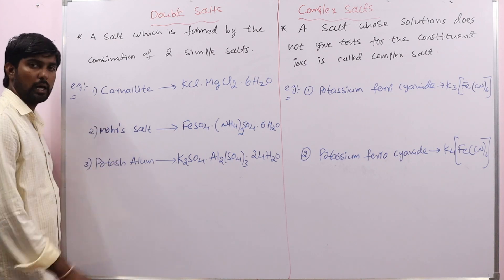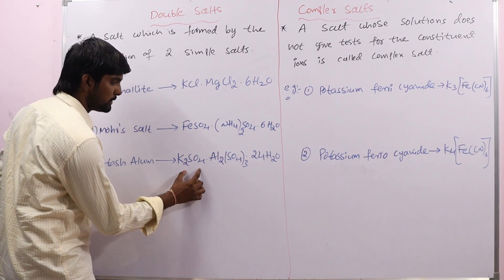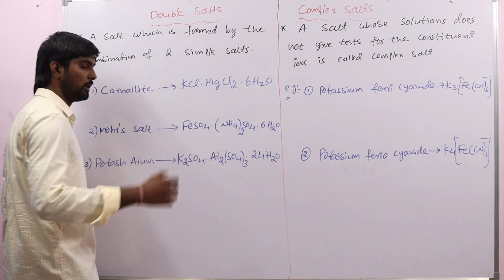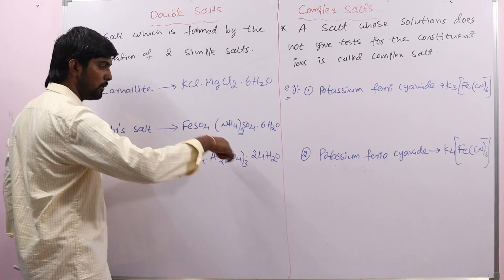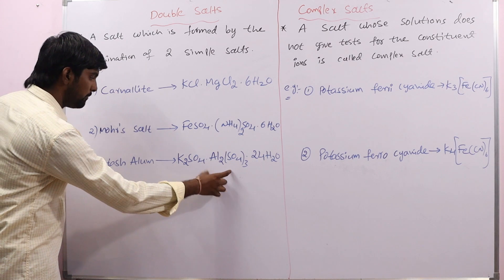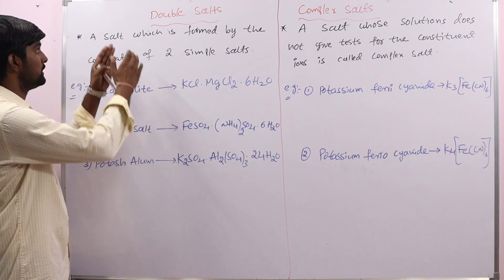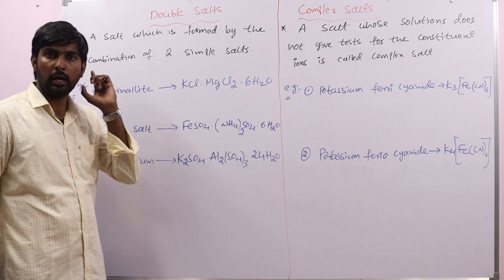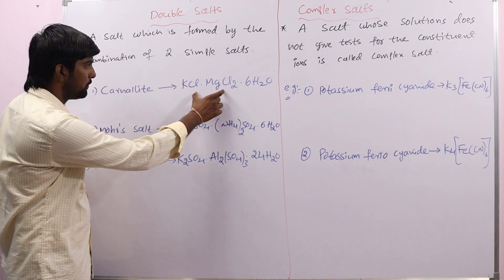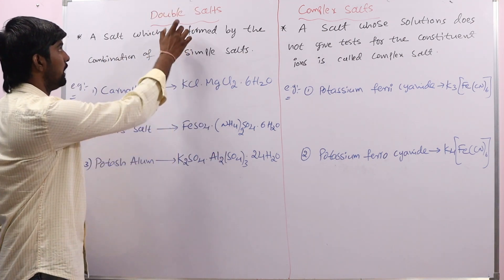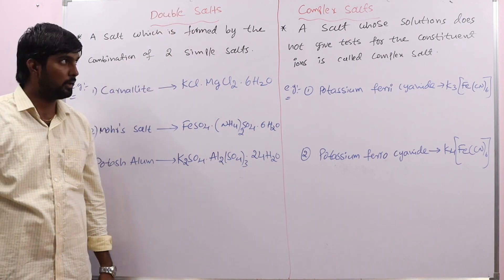The next example is potash alum. It is formed by the combination of potassium sulfate and aluminium sulfate. Potassium sulfate plus aluminium sulfate gives the salt called potash alum. So, to summarize: a salt which is formed by the combination of two simple salts is called a double salt.